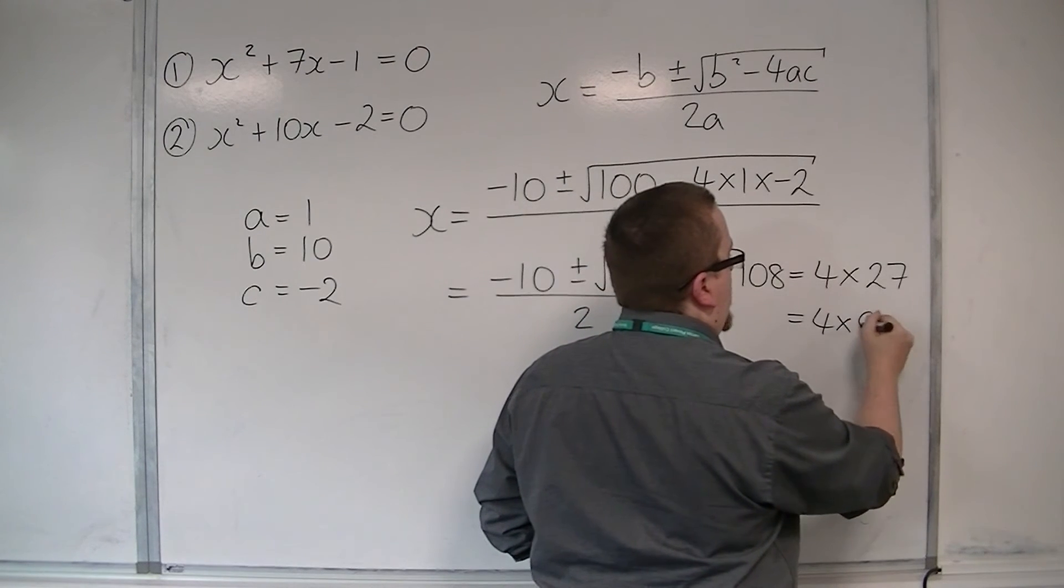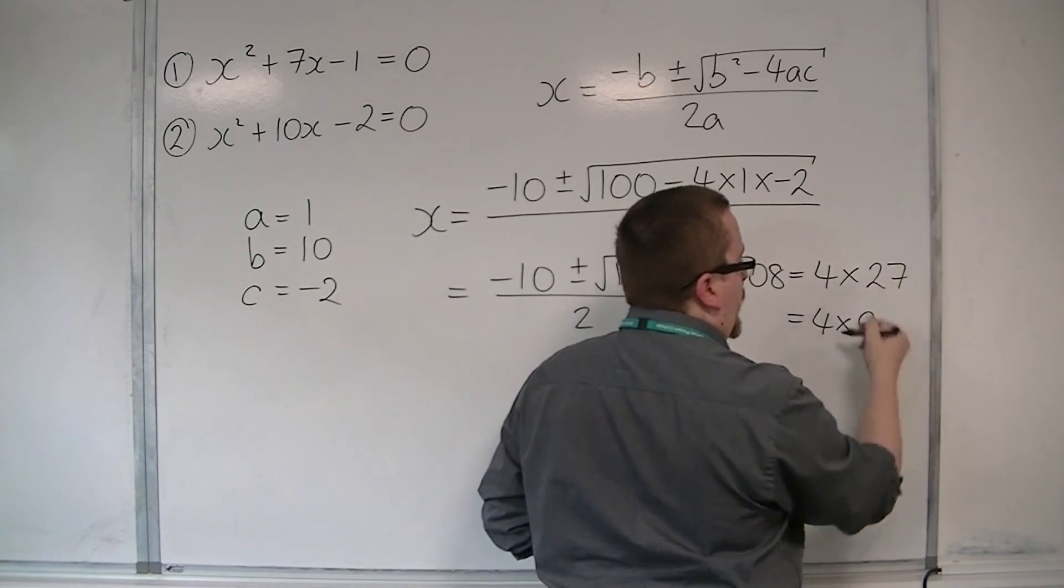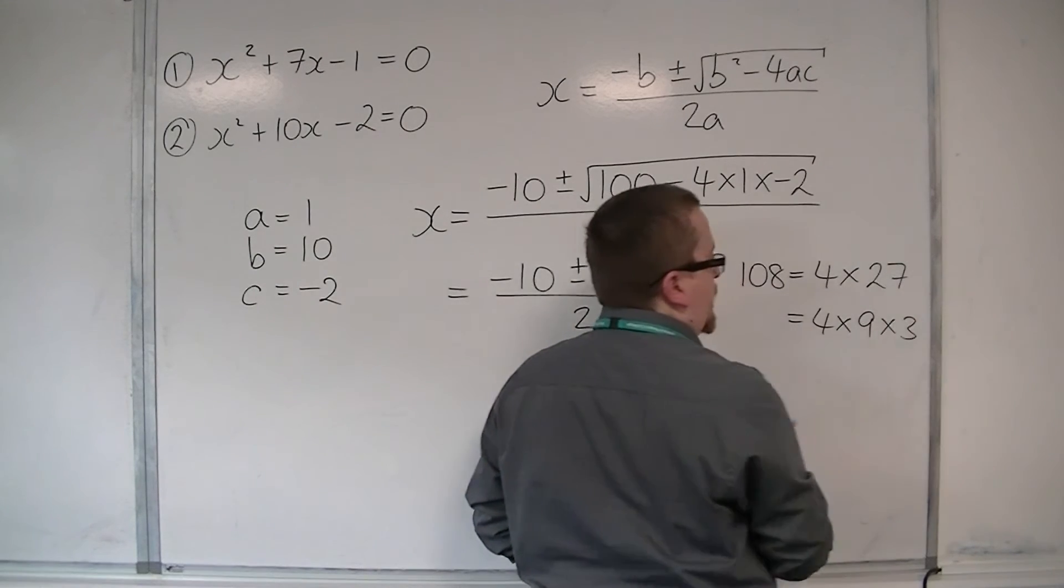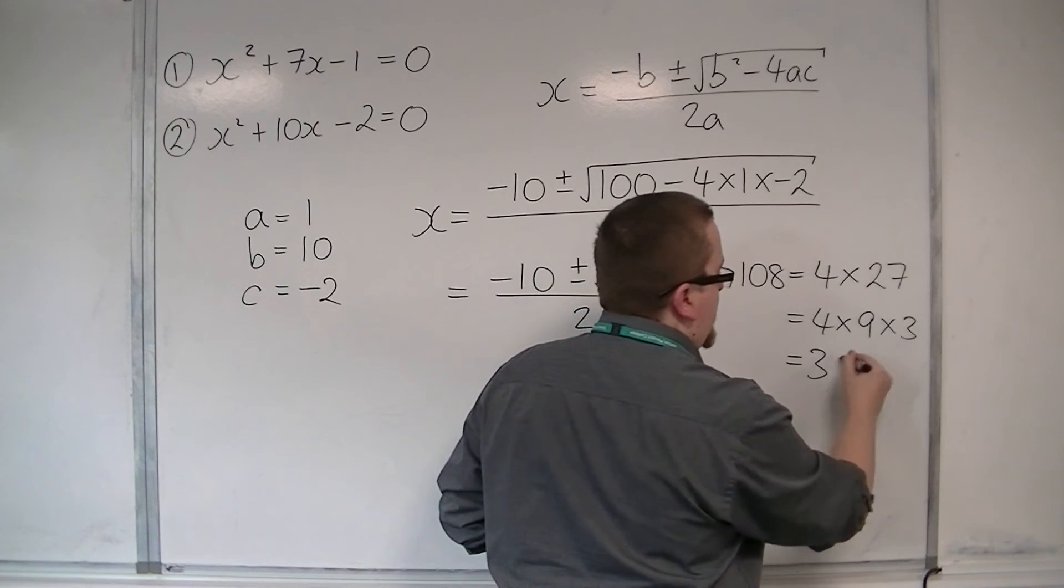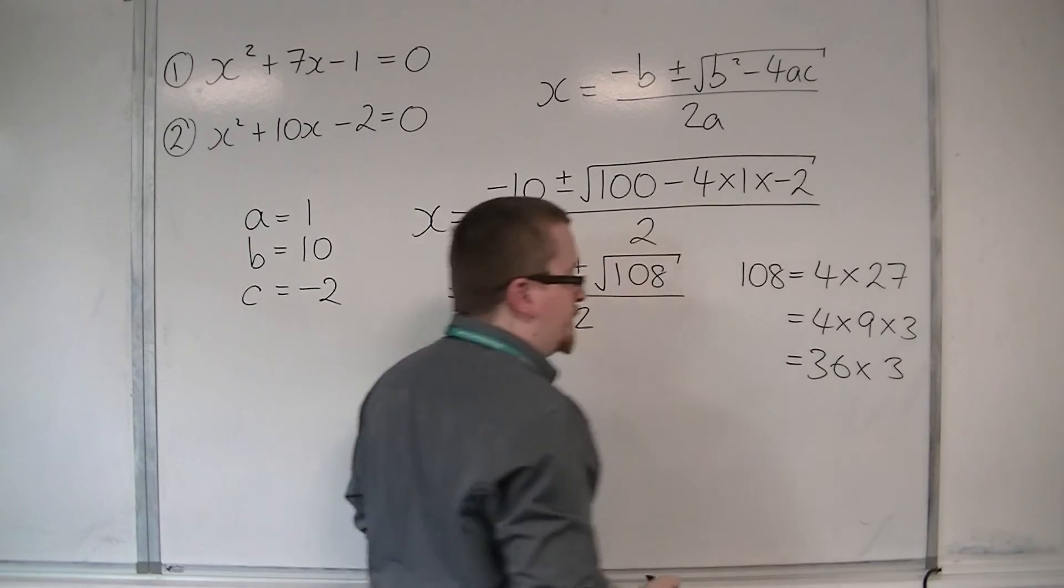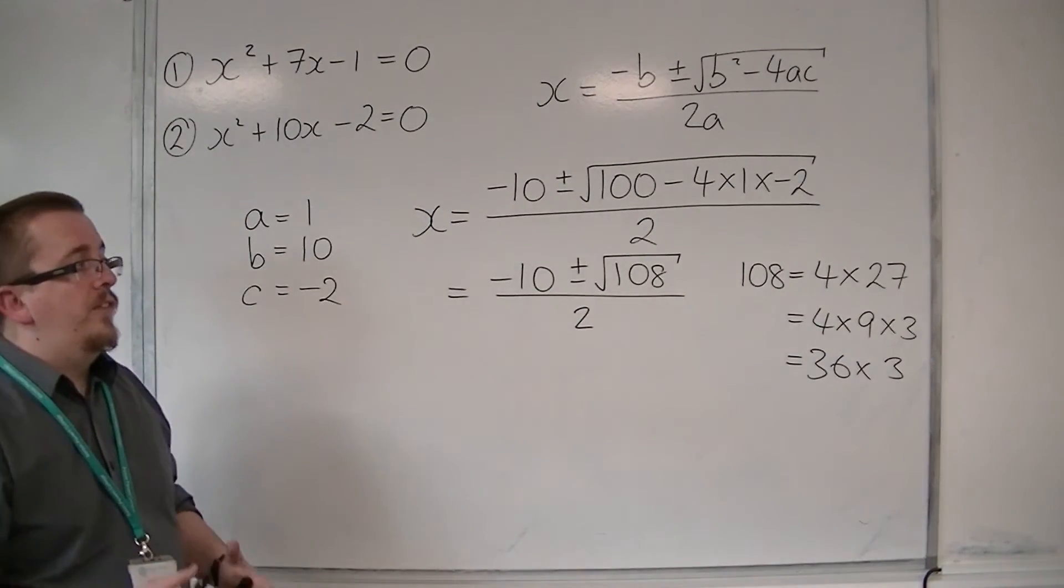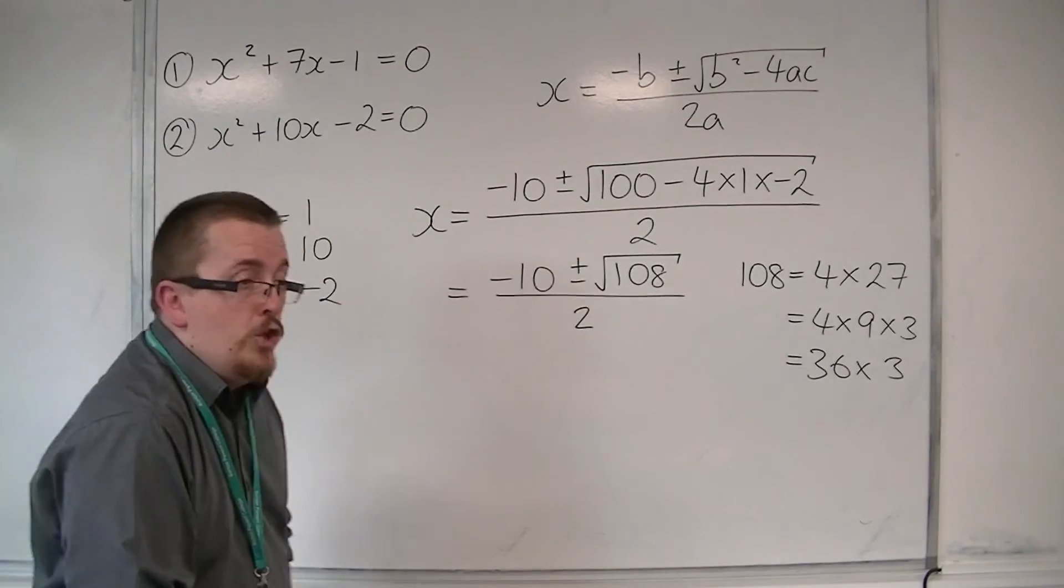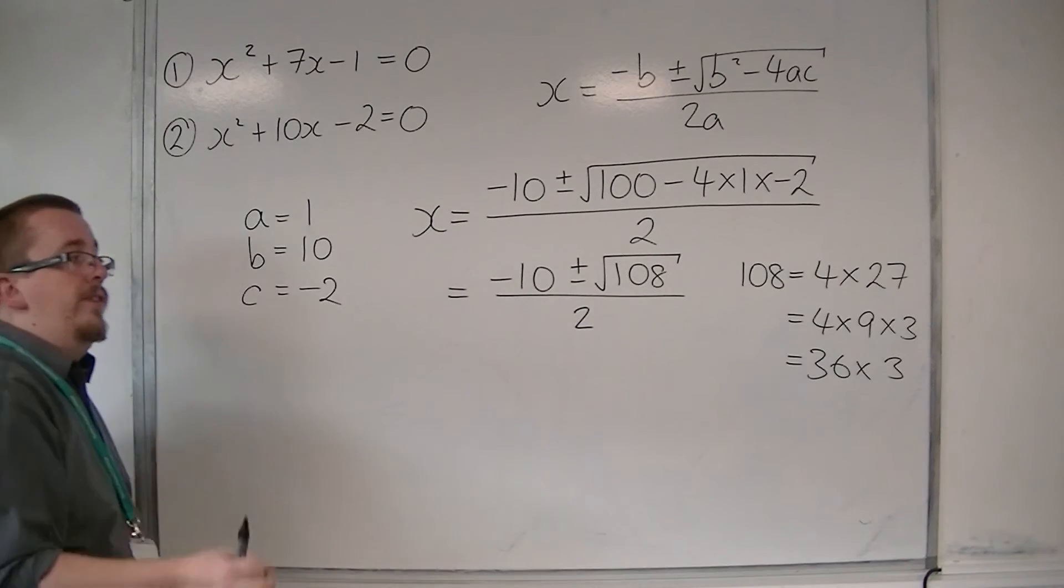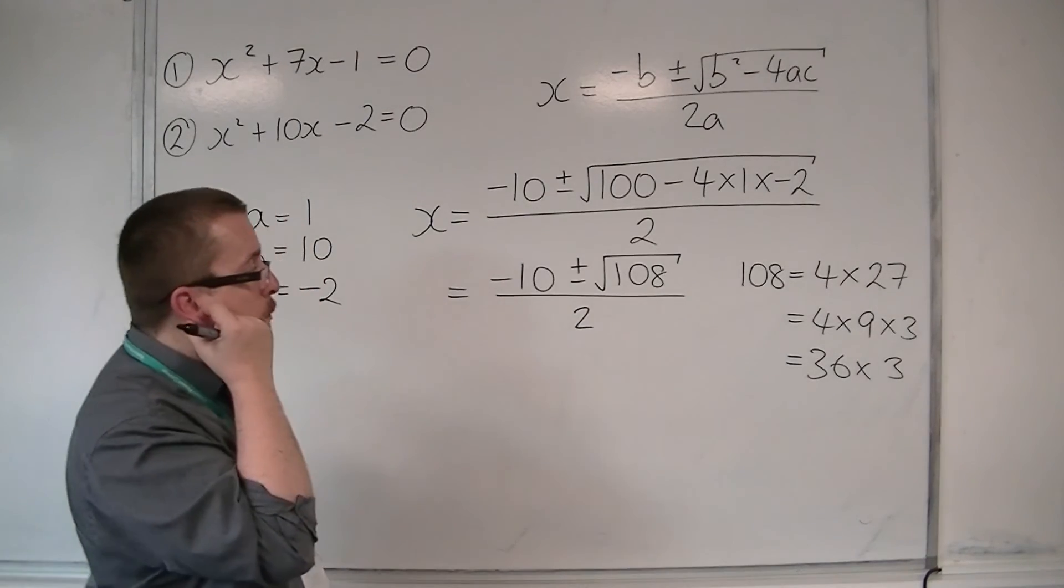So that can be written as 4 times 9 times 3. So 27 is 9 times 3. So that's 36 times 3. So 36 is the square number that also went into 108, which if you spotted it initially, would save you this working out by just showing you that that working out can be done.